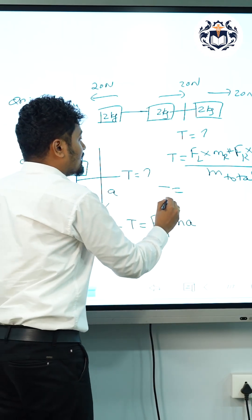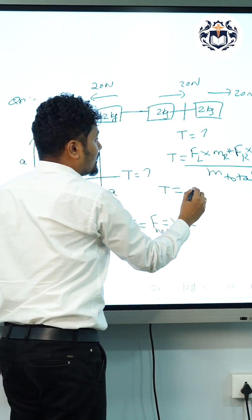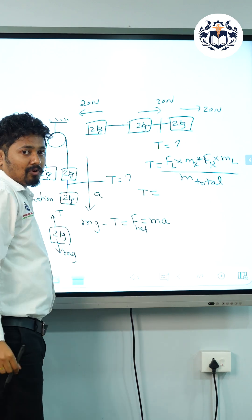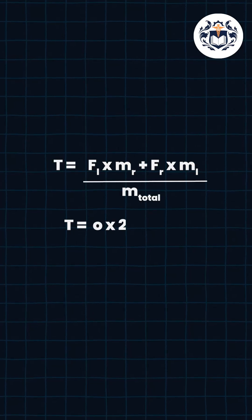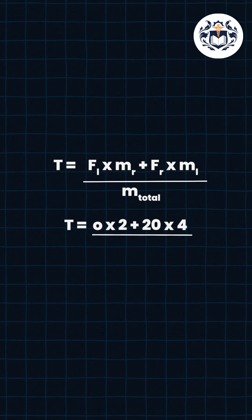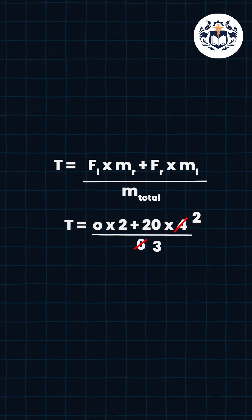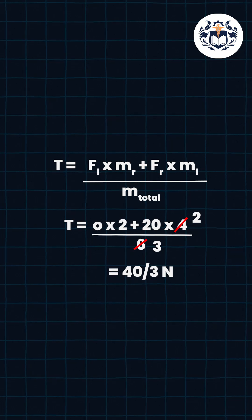Then you will get tension as follows: the left side force is 0, right side force is 20, right side mass is 2 kg, left side mass is 4 kg. So if you apply that, 0 into 2 plus 20 into 4 divided by total mass, that is 6. So you will get the answer is 40 by 3 Newton.